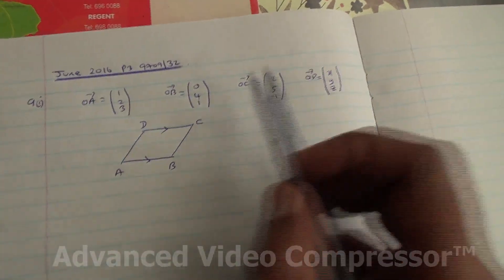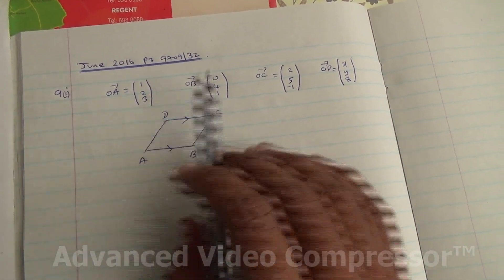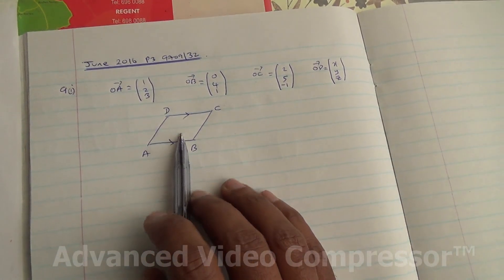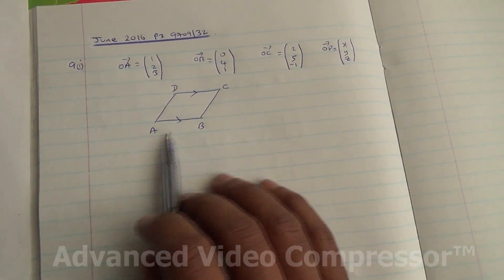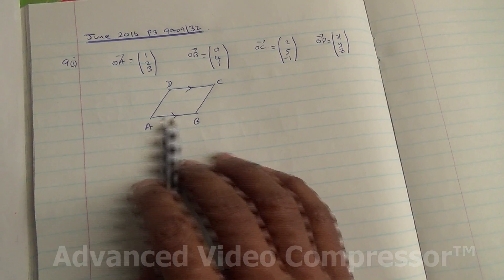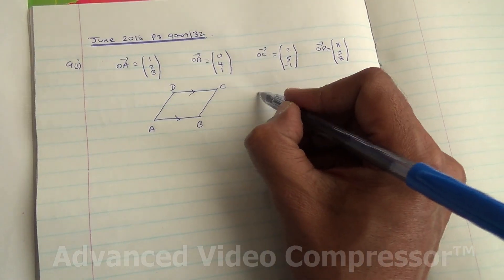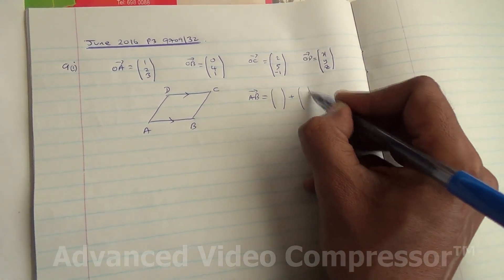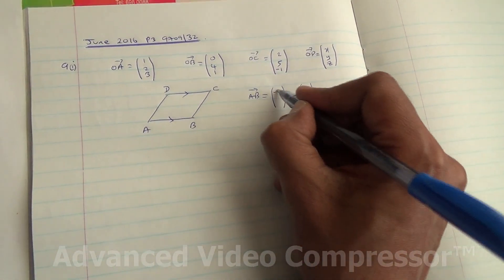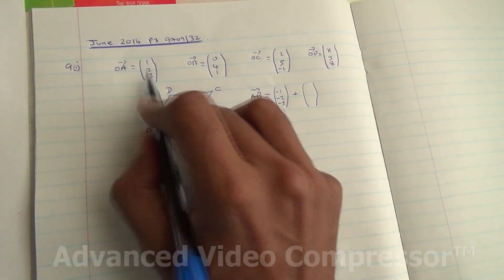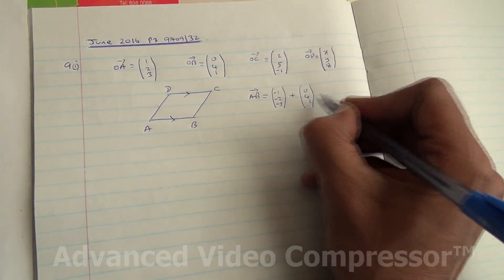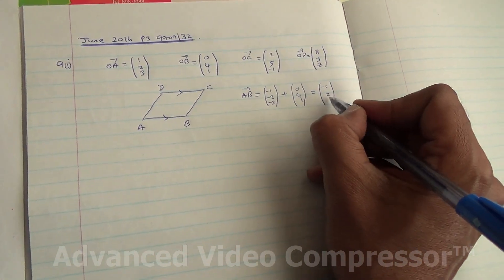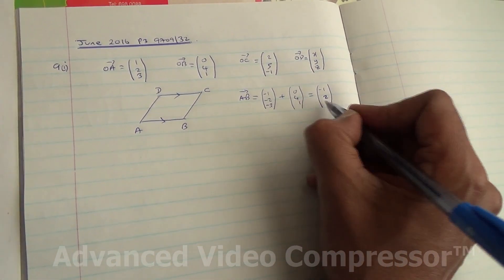The data we have is OA, OB, and OC as given. We need to find D, and I've put an illustration here to show roughly how it looks. We can find vector AB. Vector AB is AO + OB. AO is (-1, -2, -3) plus OB which is (0, 4, 1). Adding those two vectors gives us AB = (-1, 2, -2).